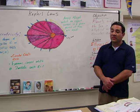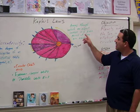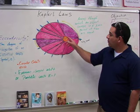Kepler's second law states that areas through which an object sweeps in a given period of time are equal. In the example of Halley's Comet, Halley's Comet has not a circular orbit but a very elliptical orbit around the sun.